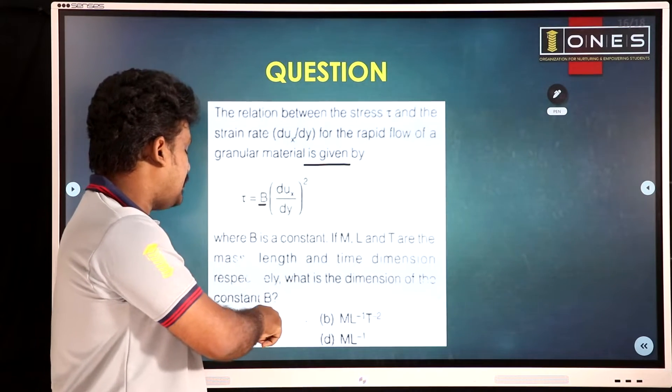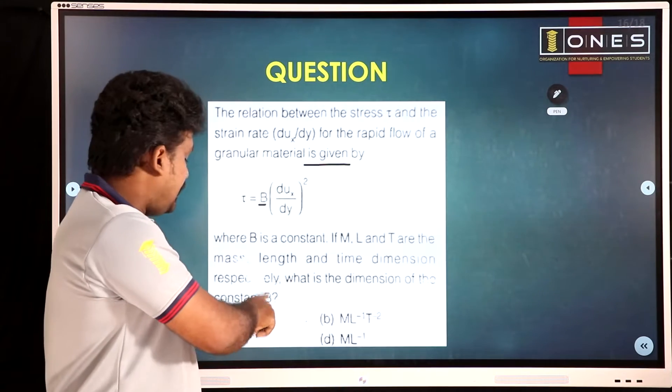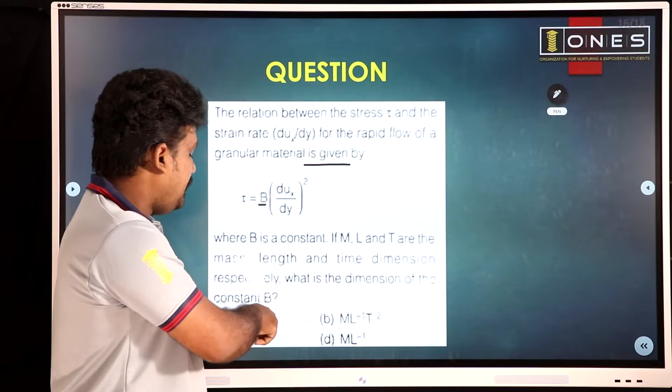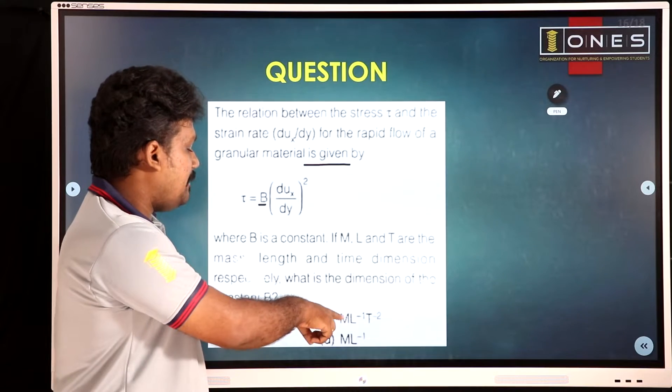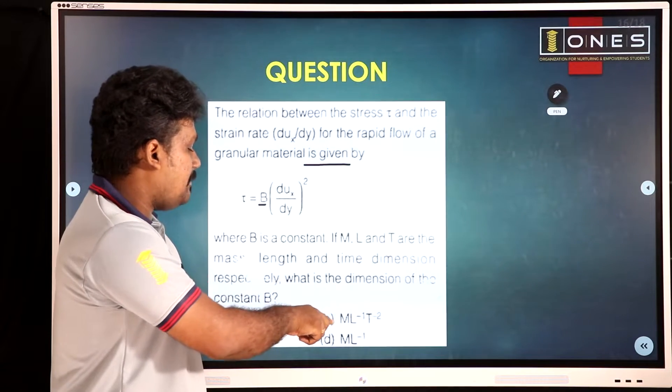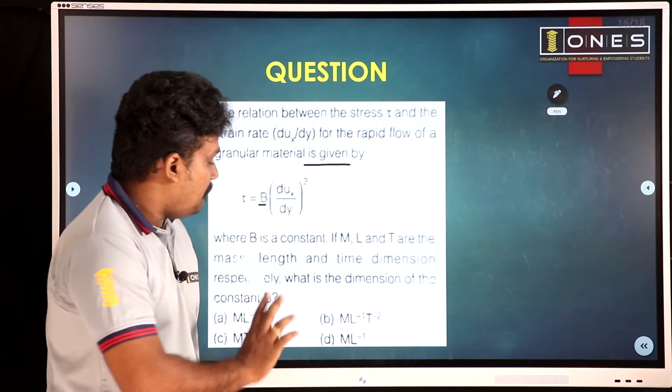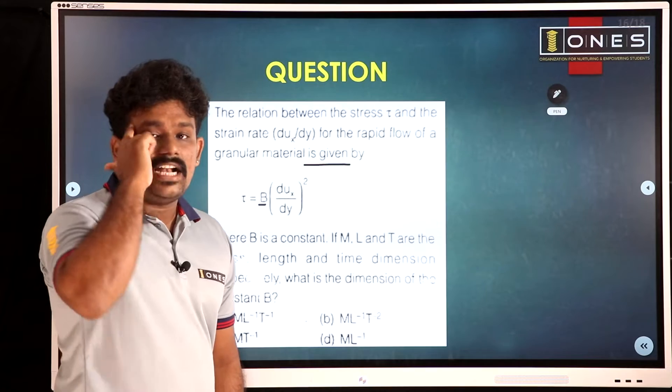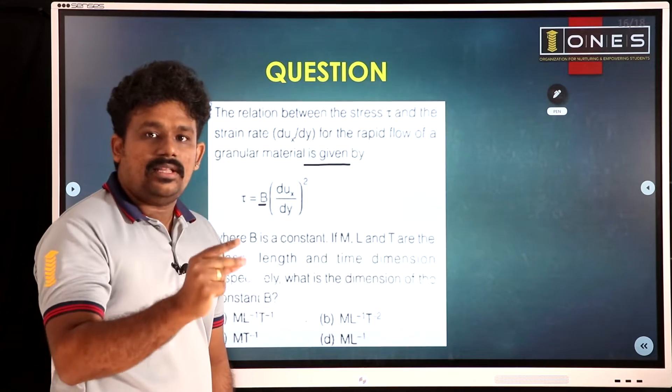There are 4 options: (a) ML⁻¹T⁻¹, (b) MT⁻¹, (c) ML⁻¹T⁻², (d) ML⁻¹. What is the correct option?